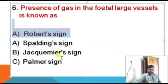Palmer sign refers to uterine contractions during bimanual examination, present at 4–8 weeks of pregnancy.